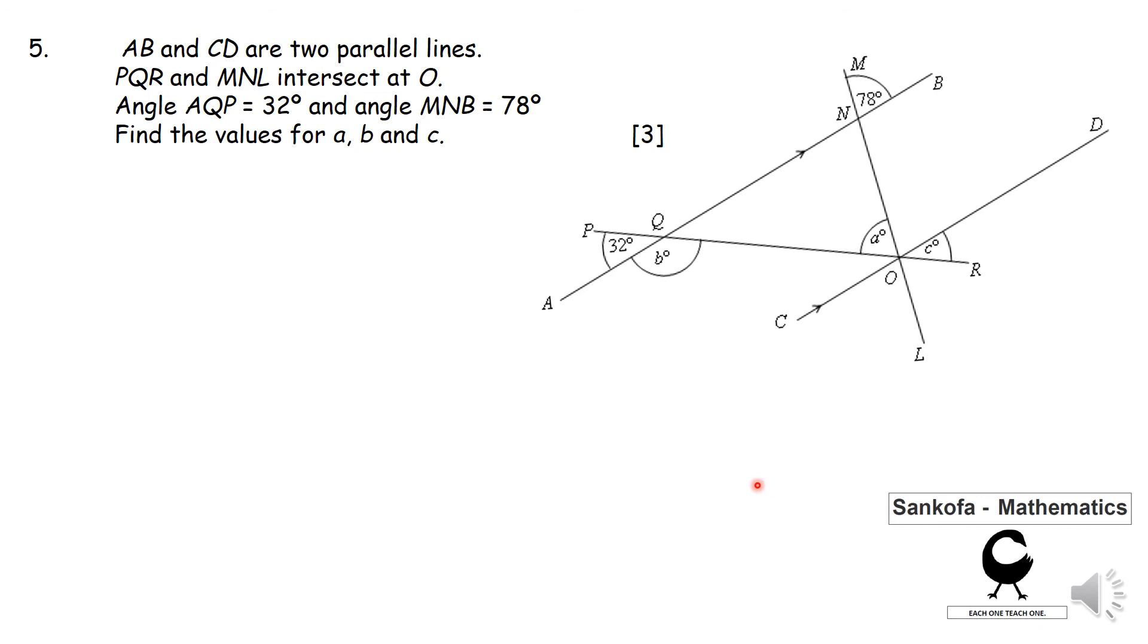Right, so I hope you had a go. So let me just bring in what I have. I know that this is going to be 78 degrees. The reason for that is corresponding angles, or vertically opposite angles, rather, are equal. Same applies here. This is going to be 32. So what you're realizing is, I can actually calculate angle a, as it's a triangle that is formed in there, and the angles of a triangle add up to 180. So taking the sum of 78 and 32 and subtracting them from 180 gives me that angle, which is 70 degrees.